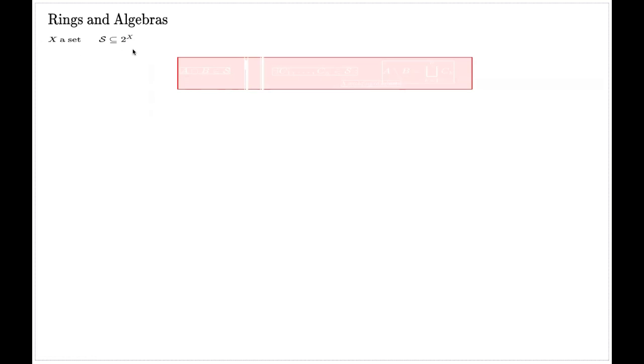In this video I will briefly explain the structures we introduce on the collection of subsets of a given set. These structures will be helpful in studying measures. So over the set X, we generally consider some collection of subsets which I will call S, which is non-empty, so at least one element will be there. We will require that this collection of subsets S satisfies a few properties, and in that case we will call it with a certain title.